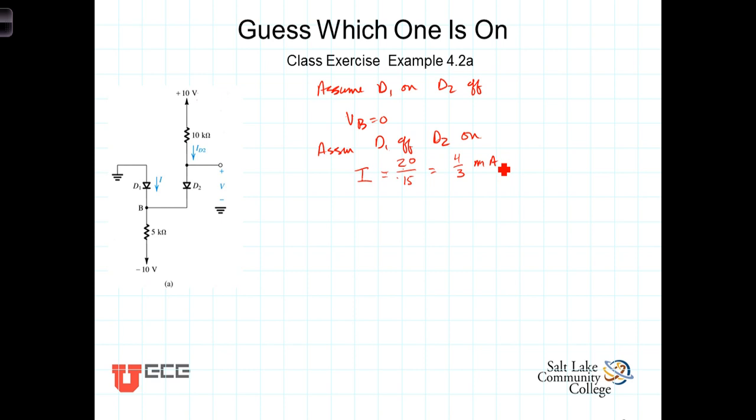Now, with that current, we want to find out what is the voltage here at B. We're wanting to make sure that the voltage here, in order for this assumption to be correct, this voltage here would need to be greater than zero to keep this diode off. So what would the voltage at B be? Well, it would be negative 10 volts plus the voltage drop across here to get us up to V sub B. So V sub B would equal negative 10 plus 5K times four-thirds of a milliamp.